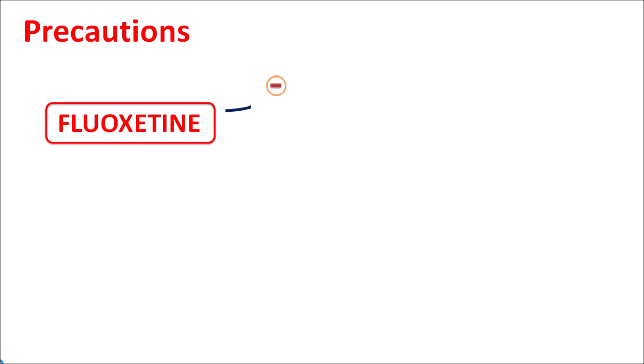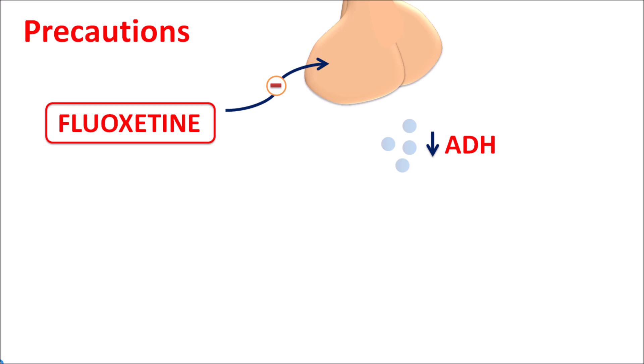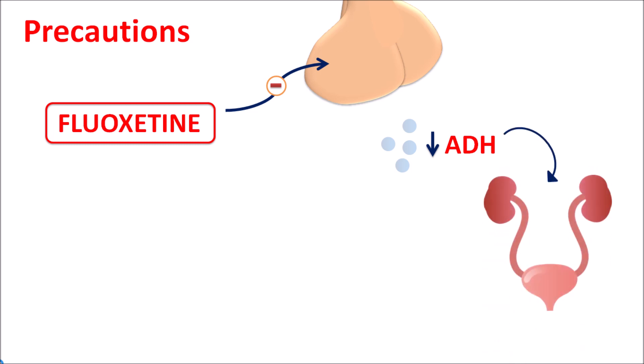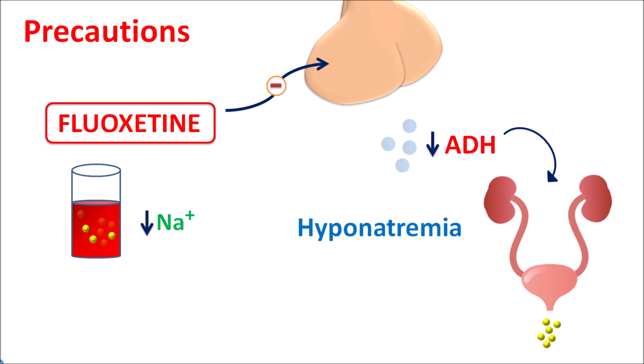Regarding precautions: fluoxetine can affect serum sodium levels. It can inhibit the anterior pituitary such that it reduces the release of antidiuretic hormone (ADH). ADH is responsible for absorption of sodium; when ADH levels are reduced, sodium absorption through the renal system is impaired and more sodium is excreted in urine. This results in hyponatremia — decreased sodium levels in the plasma, potentially below 110 mmol/L — which may cause asthenia, confusion, and even loss of memory. This drug should be carefully combined with other drugs that also produce hyponatremia, such as loop diuretics.